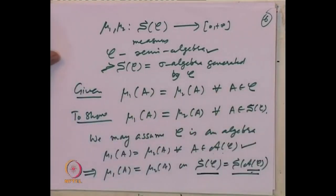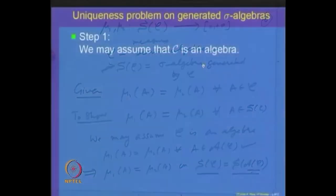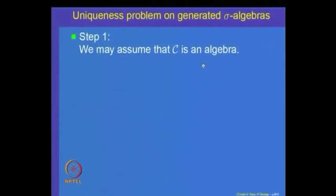So that proves the first step. As a first step in our proof, we may assume that the given class C on which mu_1 and mu_2 are defined is actually an algebra. That is the first simplification: without loss of generality, we may assume C is an algebra.